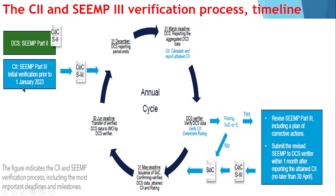From 1st January 2023 you have to carry out an initial verification — verifying that you have a plan based on which the required CII is going to be maintained for the next 3 years. After you have submitted the plan in the SEEMP it will get approved and you will get a COC. So before 1st January 2023 you need to submit the initial plan to the administration and get a COC — Confirmation of Compliance.